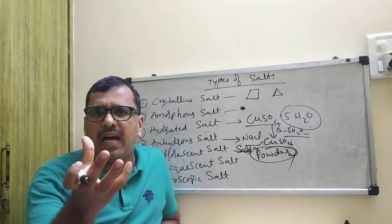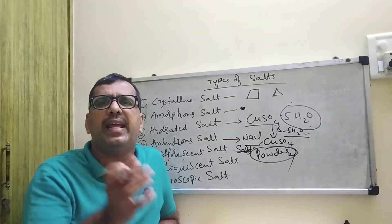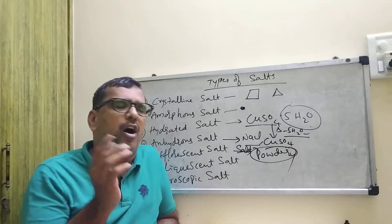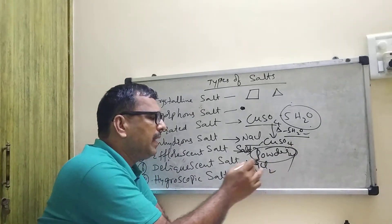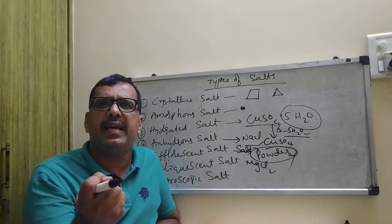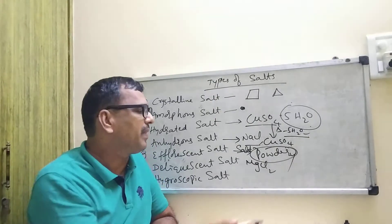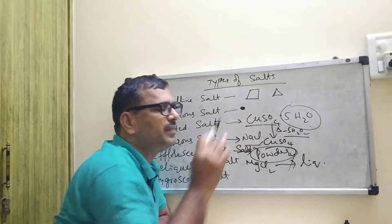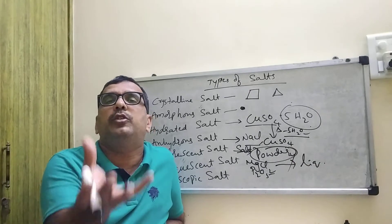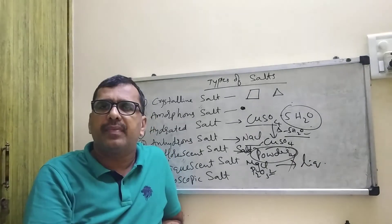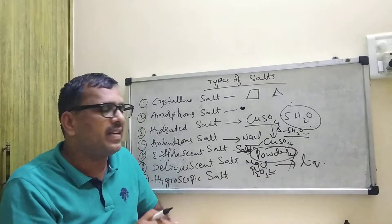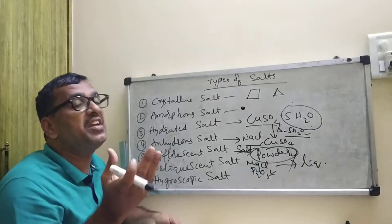What do you mean by deliquescent salt? An anhydrous salt, when exposed to air at room temperature, absorbs moisture and changes into a liquid state — then it is known as a deliquescent salt. Examples include ferrous chloride, P2O5, and magnesium chloride.